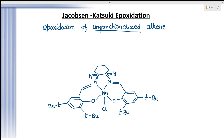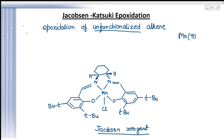What is the Jacobsen reagent? I have made the structure here — this is called the Jacobsen reagent. It is a manganese complex. You can see in the center of this complex there is manganese, and this manganese is present in the third oxidation state, i.e., the +3 oxidation state.